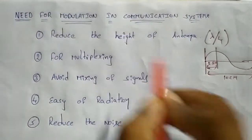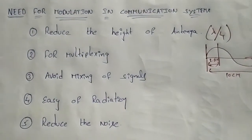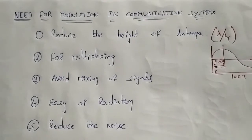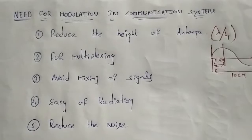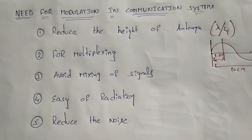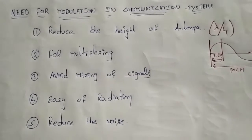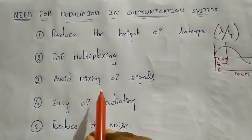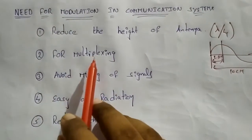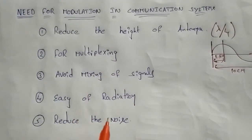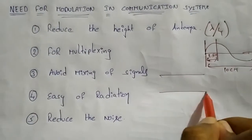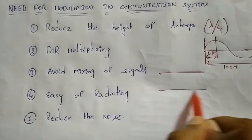For multiplexing, you can pump one signal onto the bandwidth. You can pump multiple signals at the same time — for example, through optical fiber. All these signals can be combined and transmitted simultaneously through a single path.